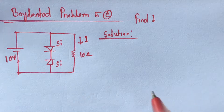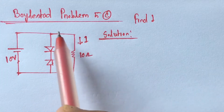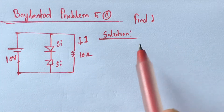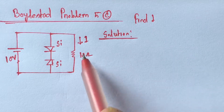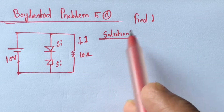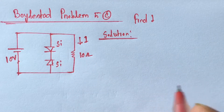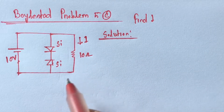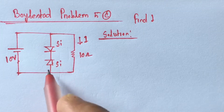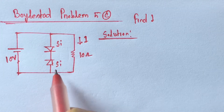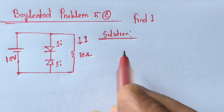Hi viewers, today we will solve problem 5C from Boyle State. Here we have to identify the current I which is flowing through this 10 ohm resistance. This is a diode related problem, so first we have to identify the state of the diode.